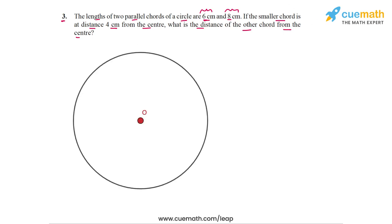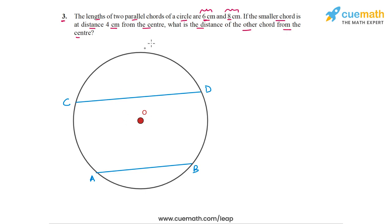Let's draw a figure for this given information. Here's a circle. Let's draw one chord — the smaller chord — which has a length of 6 cm. And let's draw a larger chord parallel to the first one with a length of 8 cm. Let's call the smaller chord AB and the larger chord CD. I have drawn the two chords to be on opposite sides of the center O, though the problem does not explicitly state whether the chords are on the same side or opposite sides of the center. In either case, the distance of the larger chord from the center will be the same.